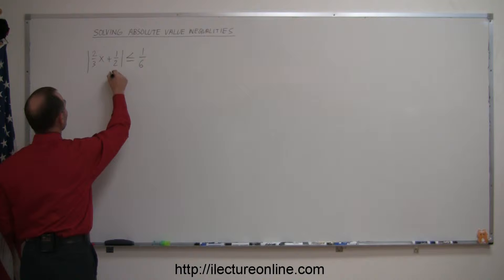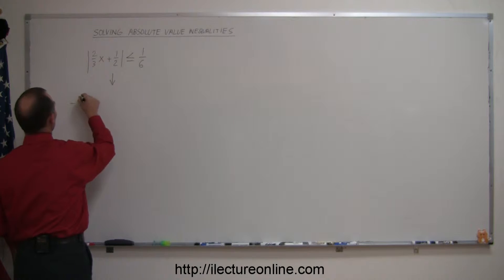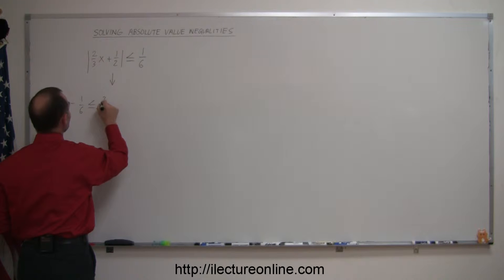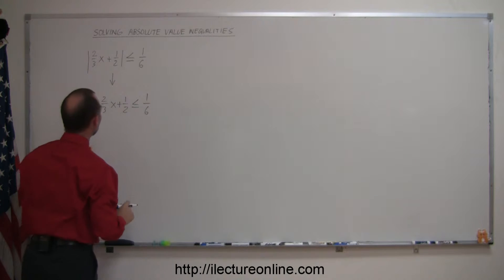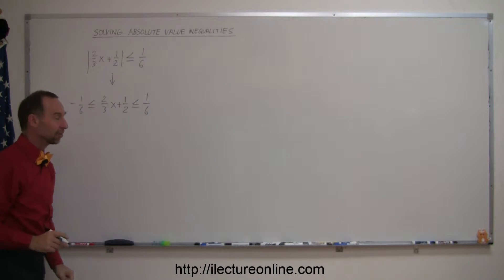So this one right here can be rewritten as negative one-sixth is less than or equal to the quantity within the absolute value symbol, which is less than or equal to the positive of that number. So this can be rewritten to be like this.